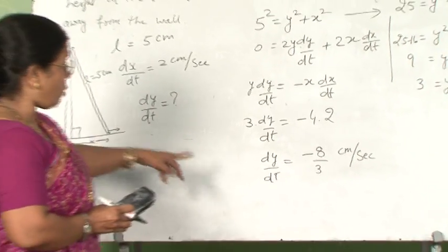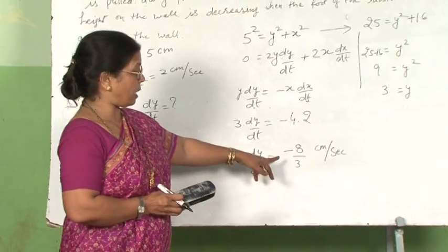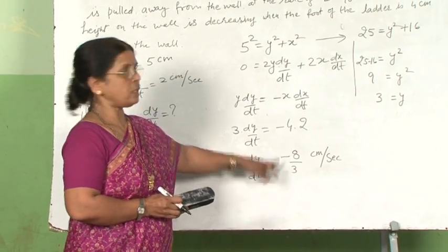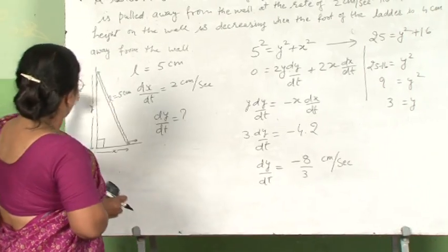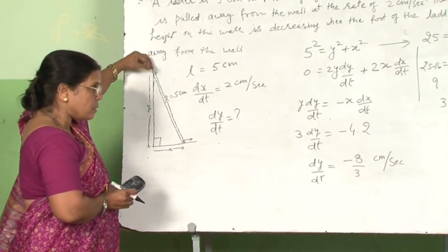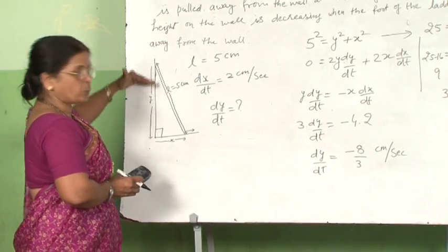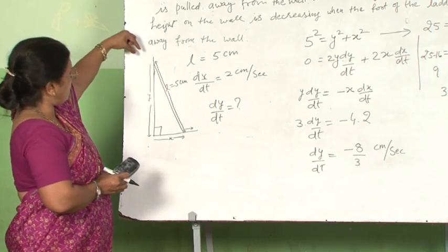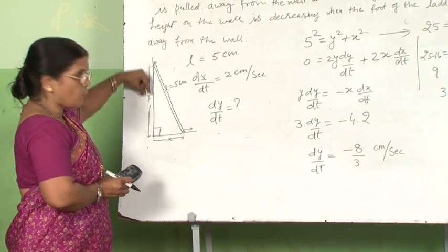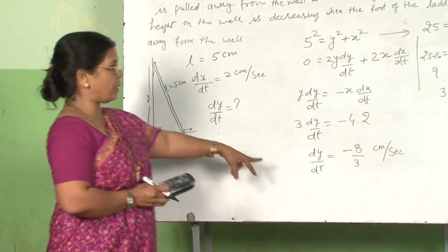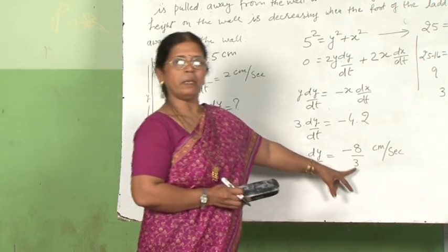Here dy/dt is negative because the height is reducing — the ladder is coming downward. So dy/dt is negative.